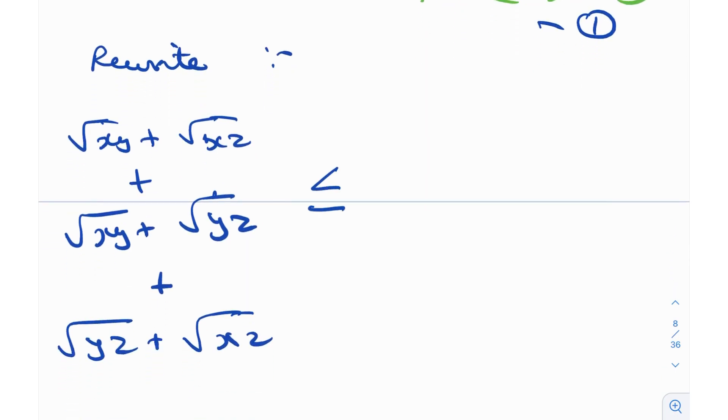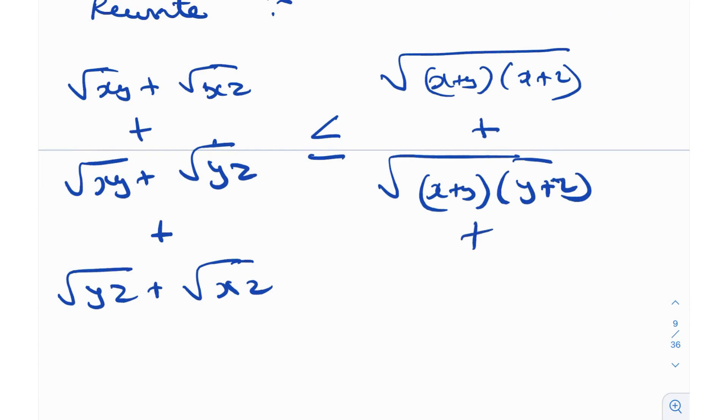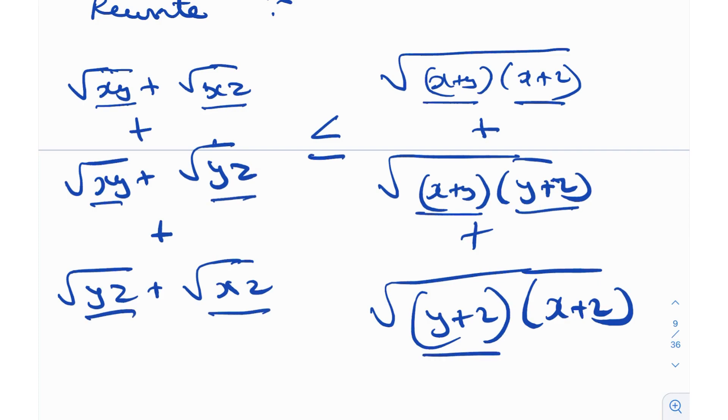So this is less than or equal to, this entire thing is less than or equal to what we have on the right hand side. And again, the right hand side, I'm going to write it like this. This is square root of X plus Y times X plus Z plus square root of X plus Y times Y plus Z plus square root of Y plus Z times X plus Z. You notice what I'm doing over here? Here we have root XY. So here we have X plus Y. Here we have X plus Z. So here X plus Z, X, Y, again, X plus Y, Y, Z, Y plus Z, Y, Z, Y plus Z, and X, Z is X plus Z. So this is something I'm just doing. I'm just rewriting what we have in equation number one. This is effectively equation number one.